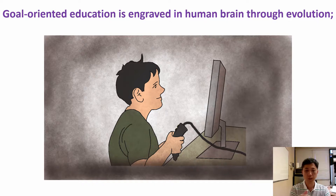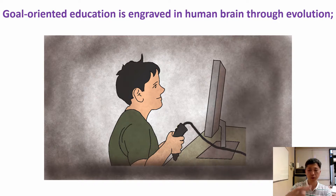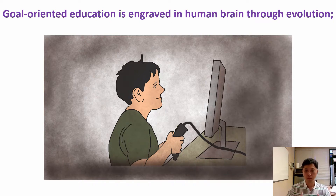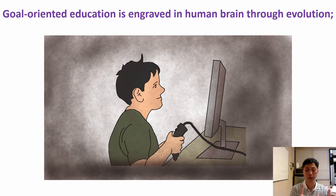Evidence for this is electronic games — designers built them level by level so players can achieve something step by step. As players conquer each level, they feel achievement and excitement and are driven to challenge the next. This is why addiction issues arise — and it's not just games. Work addiction, reading, shopping — there are goals you can achieve, and because of that, the brain becomes addicted.